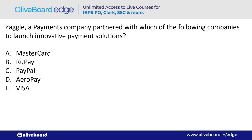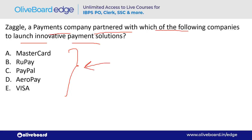Zaggle, a payment company, partnered with which company to launch innovative payment solutions? The answer is Visa — option E. Visa's headquarter is in the United States of America.